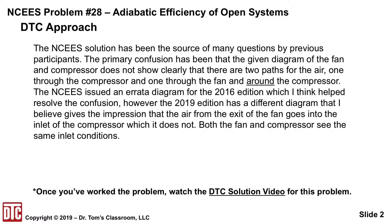This NCEES solution has been a source of many questions by many previous participants. The confusion seems to be that the given diagram of the fan and the compressor does not show clearly that there are two paths for the air — one through the compressor and one through the fan, or around the compressor. Both the fan and the compressor see the same inlet conditions, and that's going to still be a source of confusion.